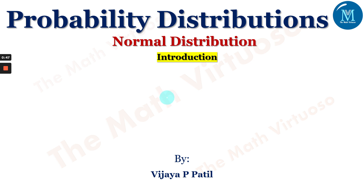Gauss used the normal curve to describe the theory of accidental errors of measurements involved in the calculation of orbits of heavenly bodies. Throughout the 18th and 19th centuries, various efforts were made to establish the normal model as the underlying law ruling all continuous random variables, thus the name 'normal.' These efforts however failed because of false premises, but the normal model has nevertheless become the most important probability model in statistical analysis.